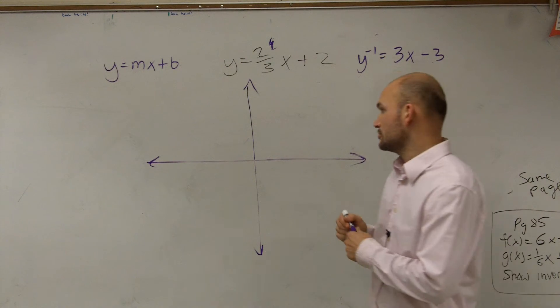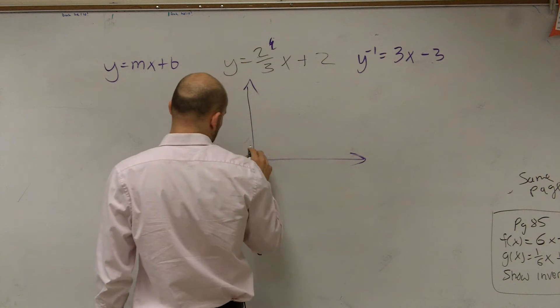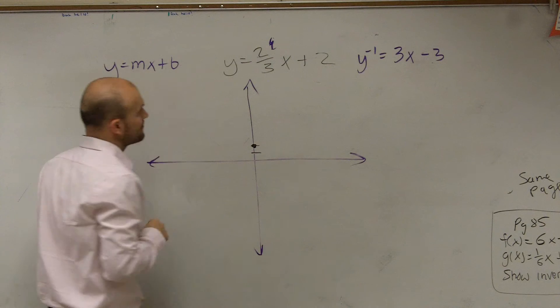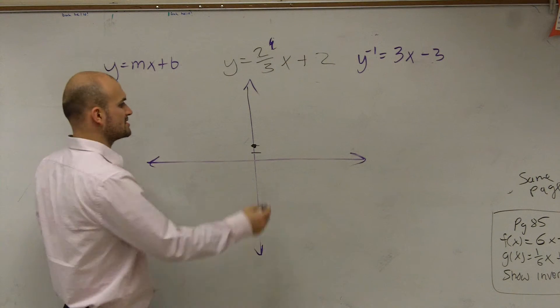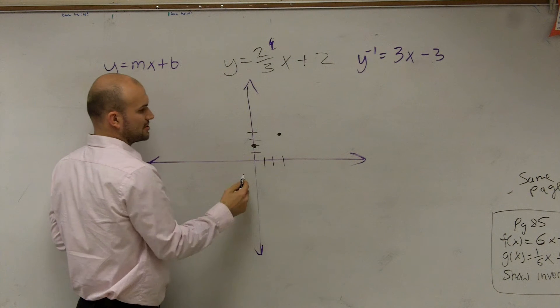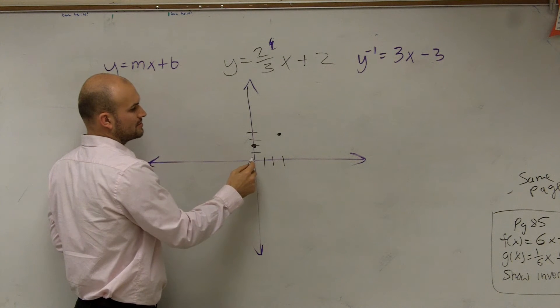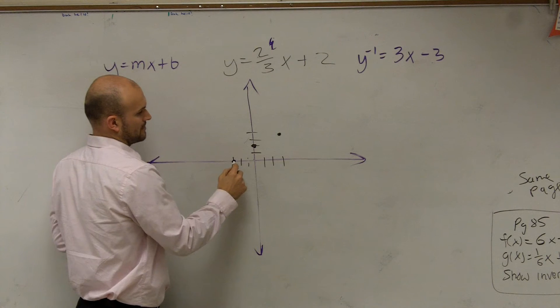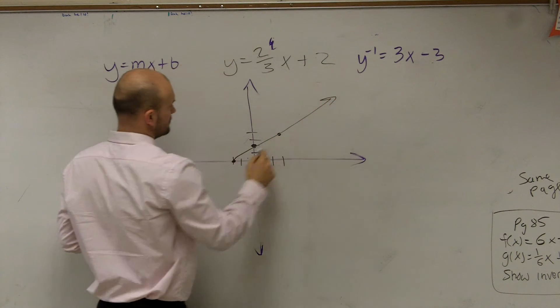So since my y-intercept here is 2, I go up to 2. I make a nice big dot. Then my slope is 2/3, so it tells me to go up 2 to the right 3. I could also go down 2 to the left 3. And I graph.